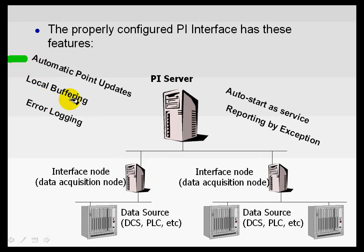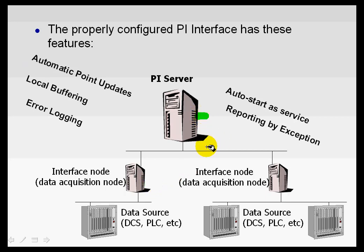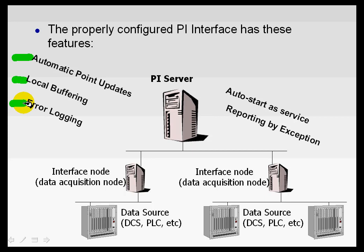First of all, it should do automatic point updates. In other words, when you create a PI Tag on the server, the interfaces affected by that change should automatically propagate that change. For example, if you change from a one-second scan rate to a four-second scan rate, the interface, without having to be stopped and started, should be able to pick that up. So we want automatic point updates. We also want local buffering — buffer data locally if we can't send to the server. And we'd like some kind of error logging to occur.